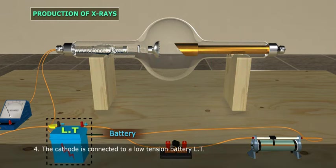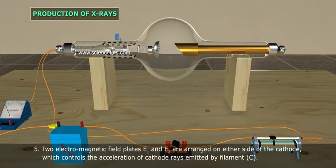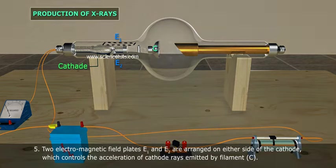Two electromagnetic field plates E1 and E2 are arranged on either side of the cathode, which controls the acceleration of cathode rays emitted by filament C.